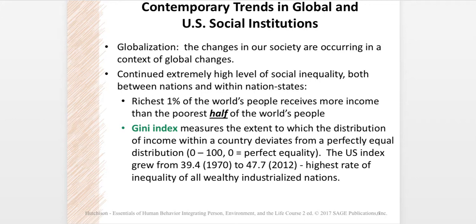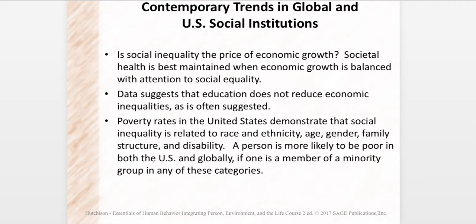The Gini Index measures the extent to which the distribution of income within a country deviates from a perfectly equal distribution. It's a 0-to-100 score, with 0 being perfect equality. The United States has grown increasingly unequal — from 39.4 in 1970 to 47.7 in 2012 — and of all wealthy industrialized nations, we have the highest rate of inequality. Some would say social inequality is the price of economic growth, but most agree that society's health is best maintained when economic growth is balanced with attention to social equality.